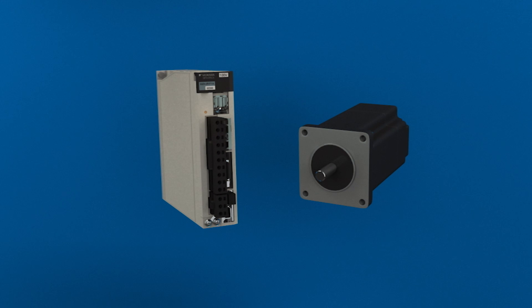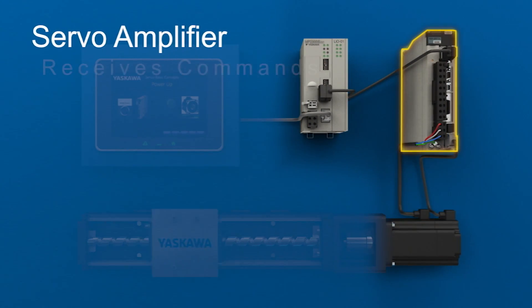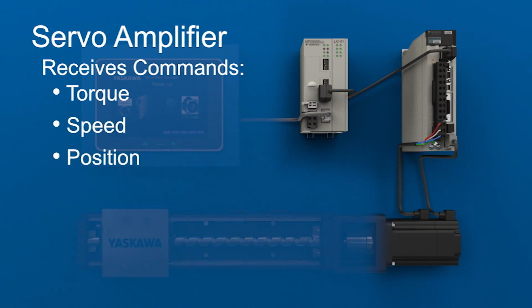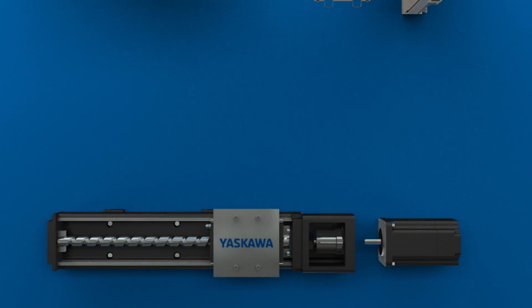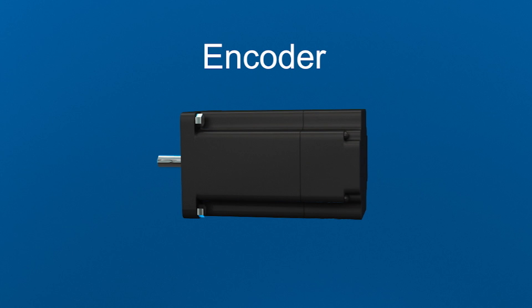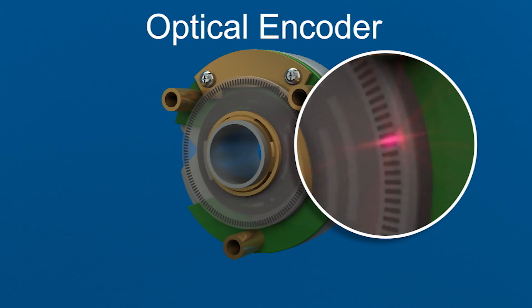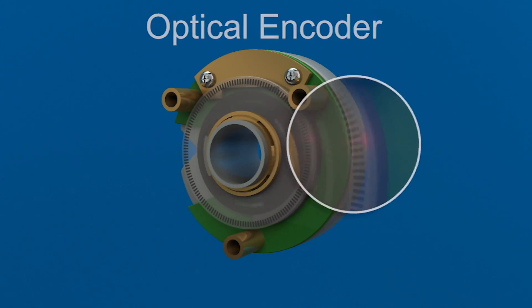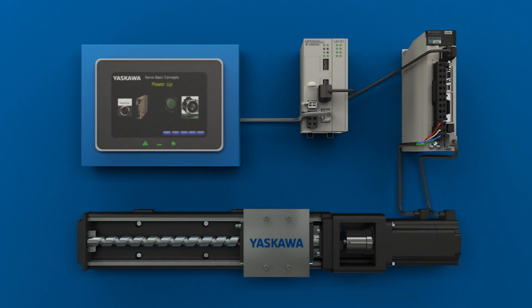The AC servo system involves two basic components: the servo amplifier and the servo motor. The servo amplifier takes in low voltage commands for torque, speed, or position, then amplifies them into a high-powered format that the servo motor can use. A servo motor is much more powerful than other motors of the same size. Powerful magnets make servo motors exceptionally quick and accurate. A feedback device called an encoder is built into the servo motor at the back end. This is an example of an optical encoder — it's a disk mounted on the motor shaft. As the motor rotates, small photosensors detect lines on the disk. The electrical pulses from the photosensor are sent back to the amplifier, which uses the data to control the motor's position, speed, and torque.